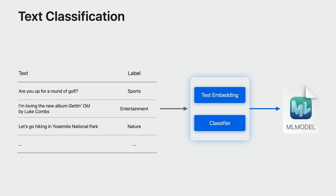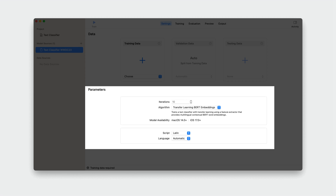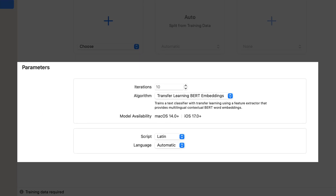You can choose the transfer learning algorithm that uses a pre-trained embedding model as a feature extractor. This year, we designed a new embedding model and trained it on billions of labeled text examples. It's a bi-directional encoder representations from Transformers model, or BERT for short. You can find the new option in the CreateML app in the model parameters section of the settings tab.